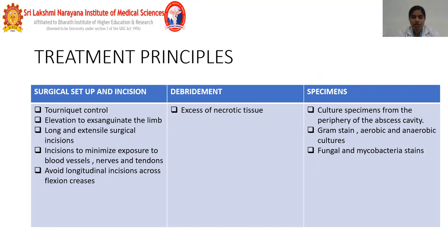The main treatment principles are as follows. All these infections involve an abscess requiring incision and drainage. Before placing the incision, tourniquet control is needed to prevent exsanguination and to exsanguinate and elevate the limb. Long and extensive surgical incisions are needed for adequate drainage of purulent material. Incisions should minimize exposure to blood vessels, nerves, and tendons. Avoid longitudinal incisions across flexion creases. All necrotic tissue should be debrided, and debrided tissue should be sent for Gram staining, aerobic, anaerobic, fungal, and mycobacterial stains, and culture sensitivities.